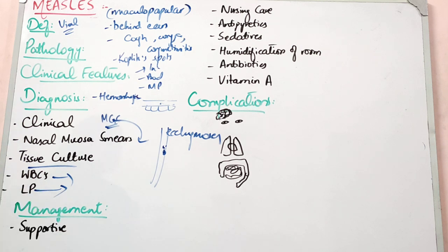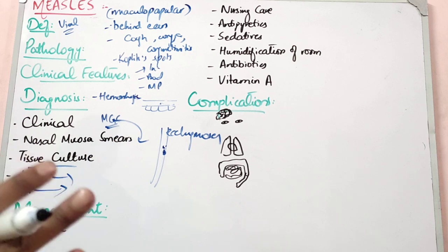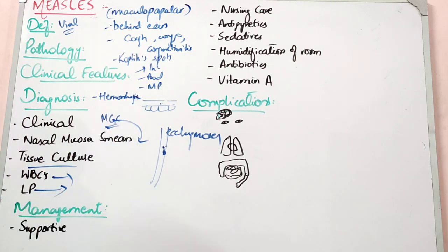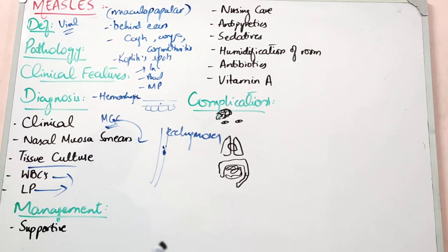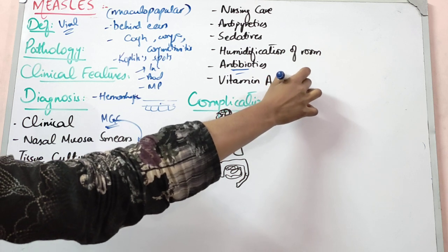Management is supportive. There is no specific antiviral therapy. You take care of the infection, maintain the patient's hygiene, and ensure the patient does not dehydrate. We give antibiotics to prevent superinfected bacterial infection, as immunosuppression from measles can predispose to secondary bacterial infections. Vitamin A also has a big role in measles management.